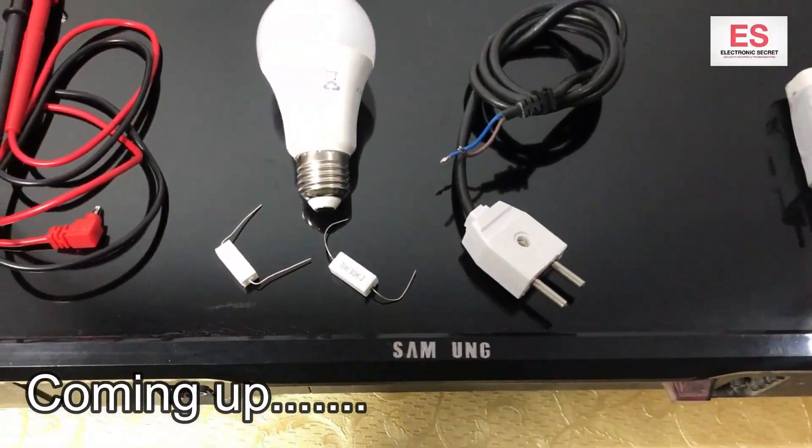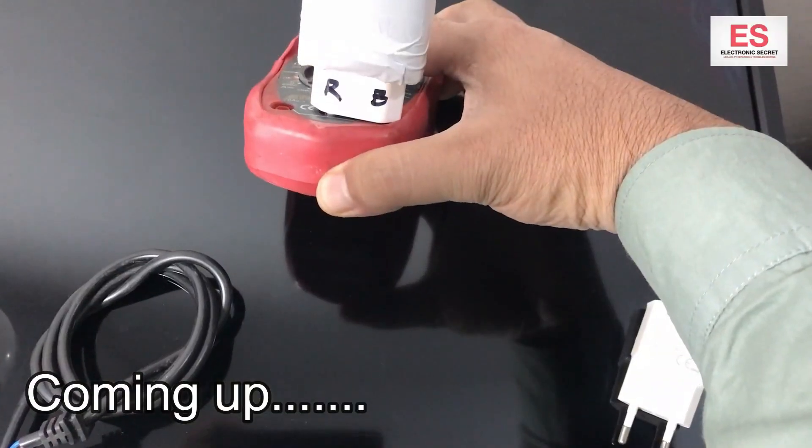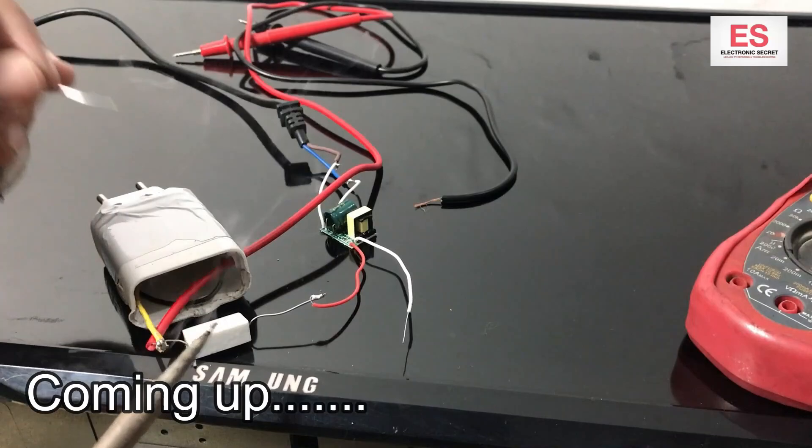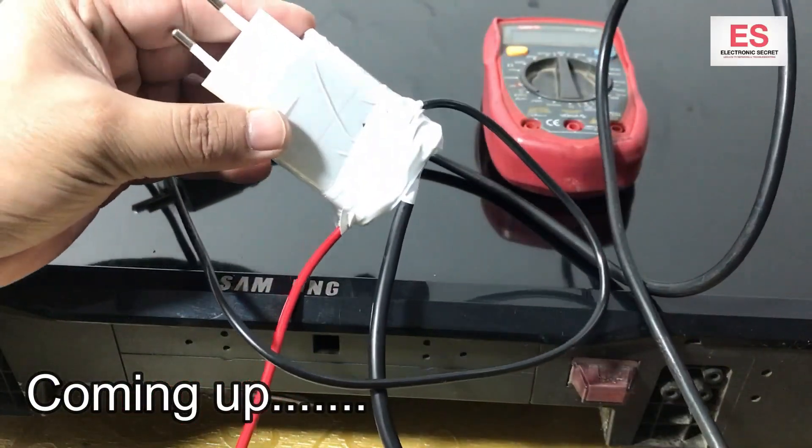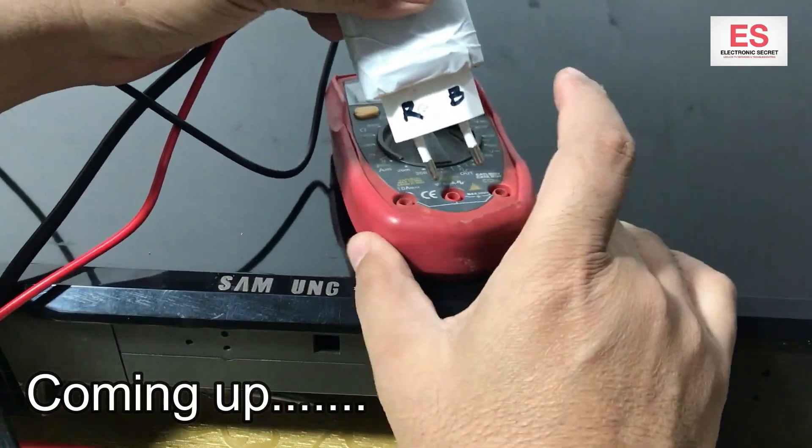Hi guys, welcome to my channel Electronic Secret. Today I am showing you how to make an LED tester using a multimeter. I have made this with the help of an LED bulb and you can see that it is working fine.